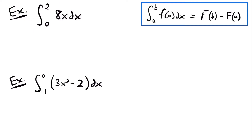If we look at this example here, we have the definite integral from 0 to 2 of the function 8x. If we want to solve this, we'll start by finding the antiderivative of this function 8x. This will be equal to 8 times x to the power of 1 plus 1 divided by 1 plus 1, and we're going to be evaluating this from 0 to 2. We use the power rule for integration on our function 8x.